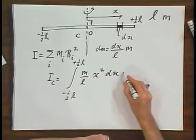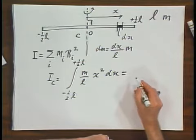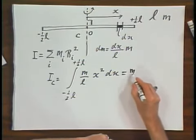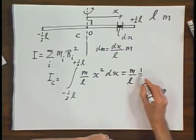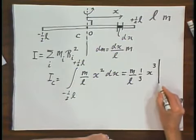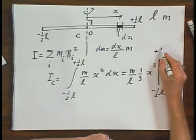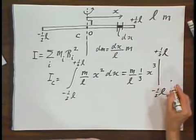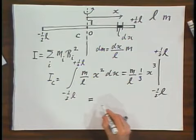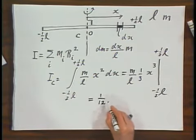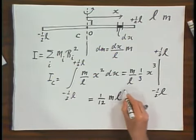And this is a relatively easy integral. This is M over L times one third times x to the third, evaluated between minus one half L and plus one half L. And you will find it not difficult, I hope, to convince yourself that this is one twelfth M L squared.